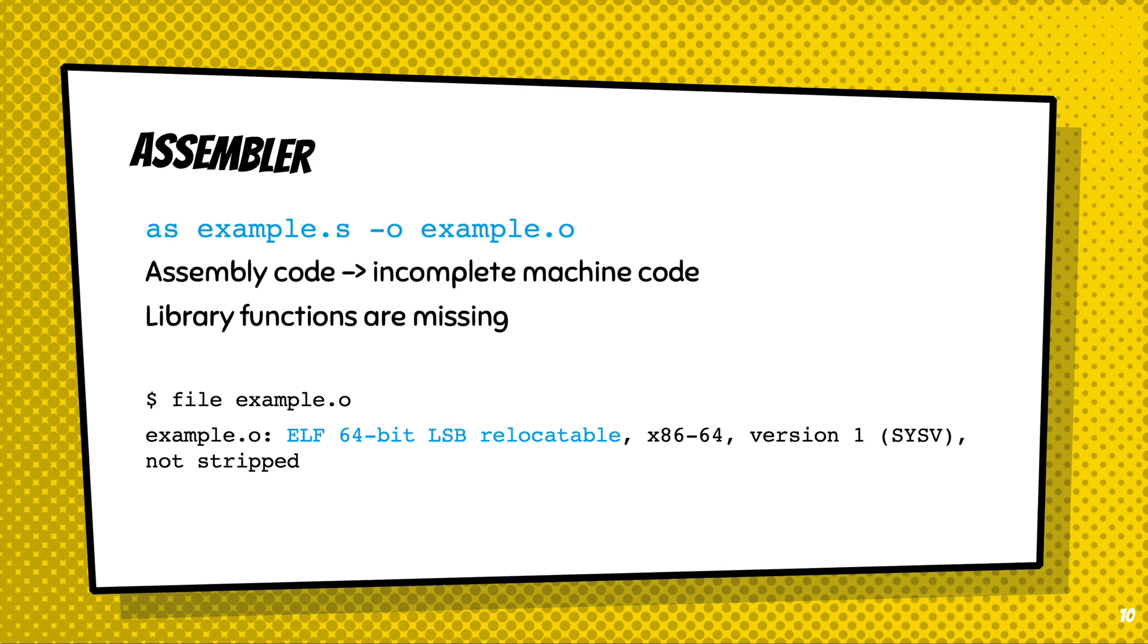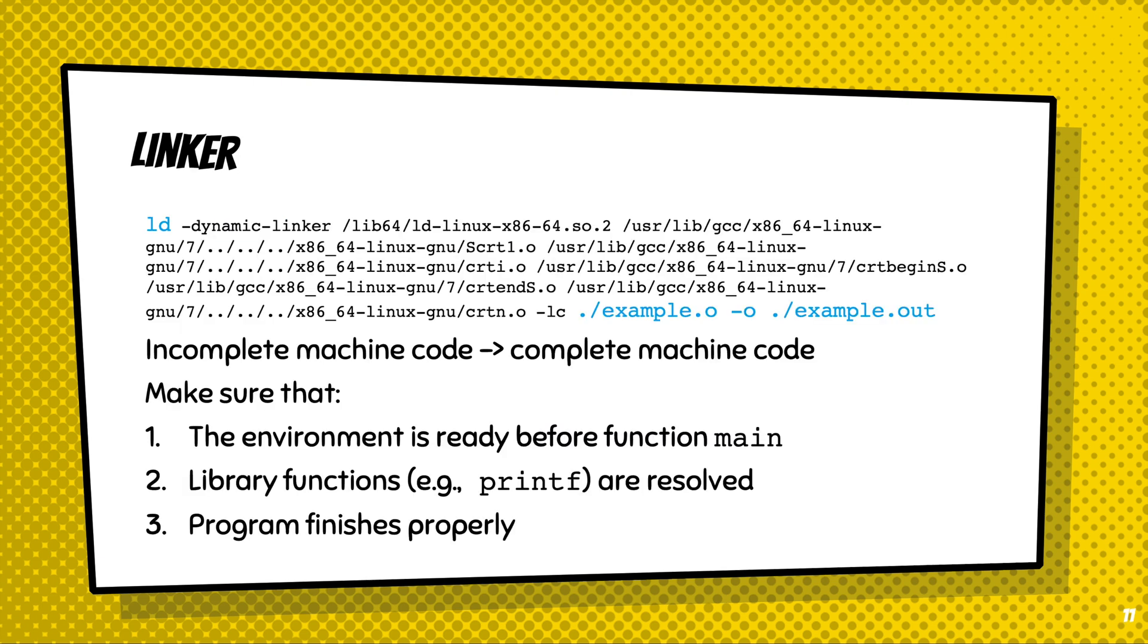And given the relocatable file, the linker will be called to translate that to an actual executable file. In the linking process, machine code will become complete. The jobs of the linker include making sure that the environment is ready before function main is called, and making sure that library functions such as printf will be resolved in the executable file.